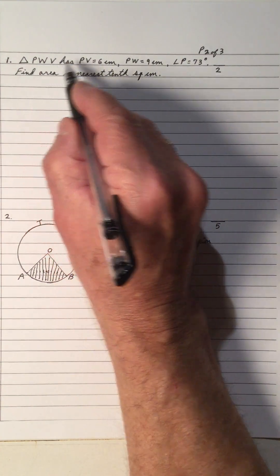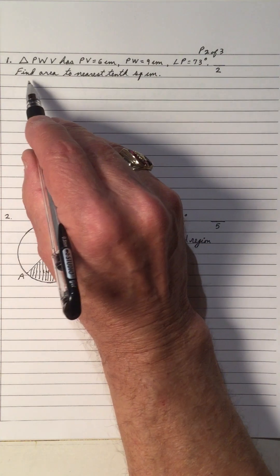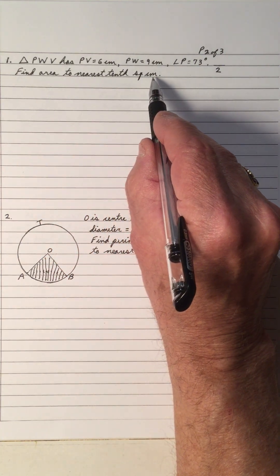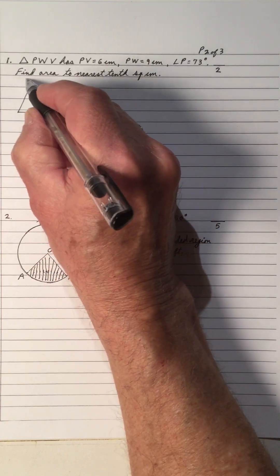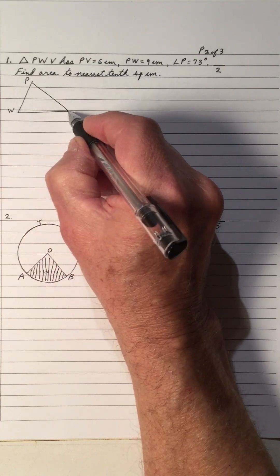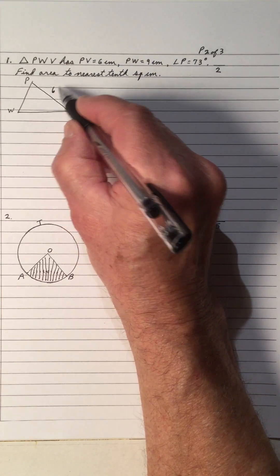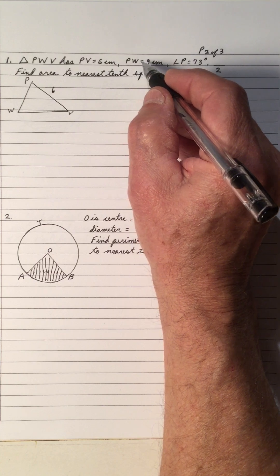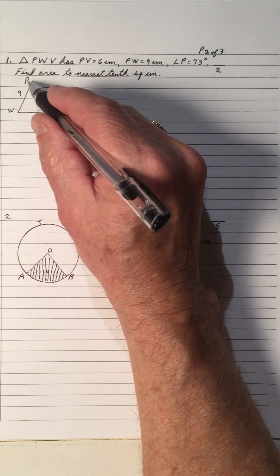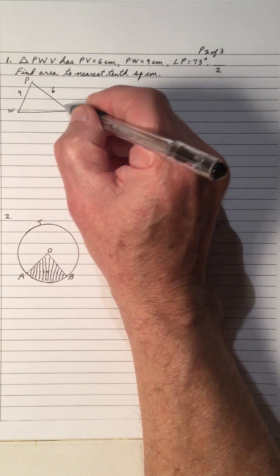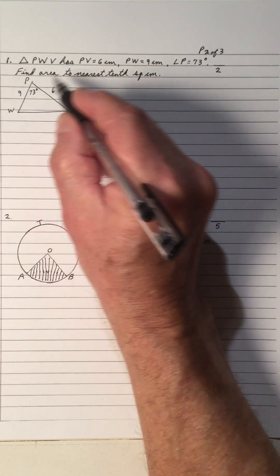Number 1: Triangle PWV has PV = 6, PW = 9, and angle P = 73°. Find the area to the nearest tenth of a square centimeter. Let's draw that triangle — we have P, W, and V. PV is 6, PW is 9. This is not drawn to scale, but angle P is 73°, so let's just go by what we have.